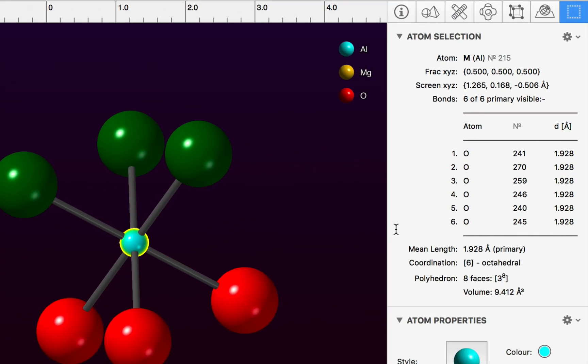then information on the selection is shown in the selection inspector. Here we have a summary of the atom's position in fractional and screen coordinates, a listing of the bond distances, the mean distance, and also a summary of the coordination polyhedron around that atom. Here we have an AL06 octahedral group and we have the polyhedral volume shown and details of the polyhedron itself.